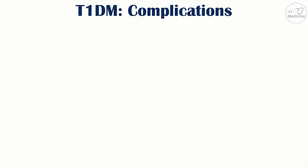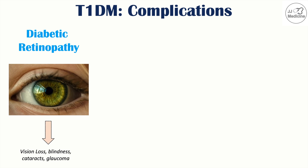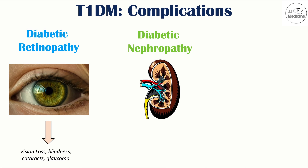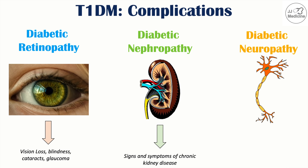There are particular complications of type 1 diabetes to mention. Diabetic retinopathy can cause blurry vision, vision loss, blindness, and increased risk of cataracts and glaucoma. Diabetic nephropathy can lead to signs and symptoms of chronic kidney disease, kidney failure, and eventual dialysis. Diabetic neuropathy leads to paresthesias — numbness and tingling — often starting in the feet and toes and working upward toward the core.